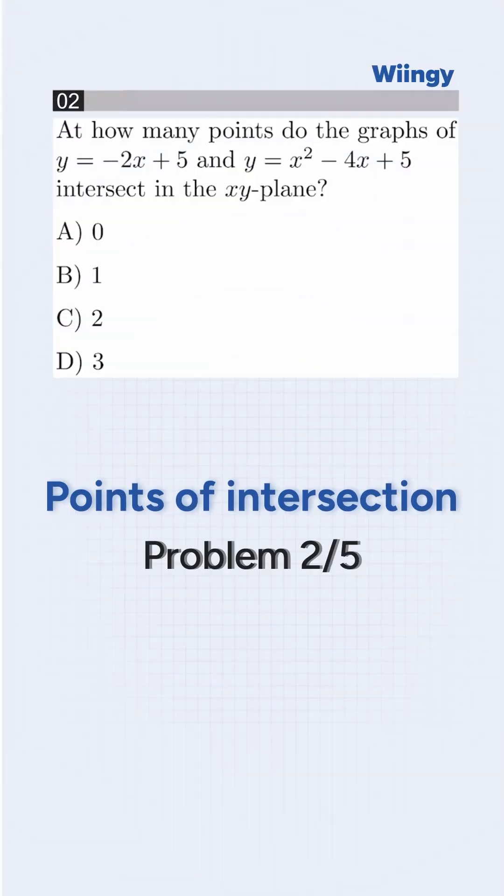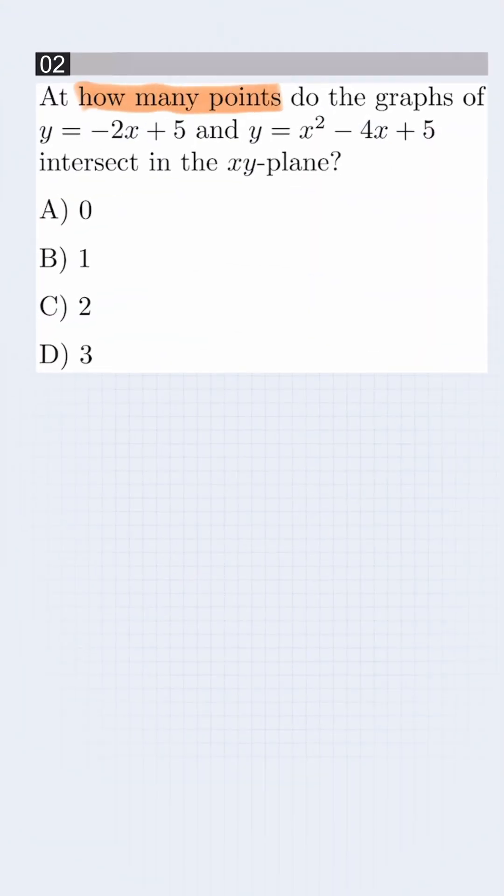Ready for a challenge? Let's find the answer fast! At how many points do the graphs of y = -2x + 5 and y = x² - 4x + 5 intersect in the xy plane?